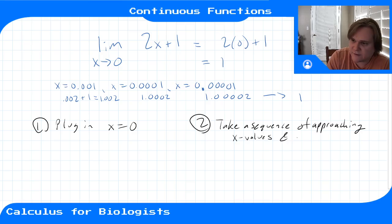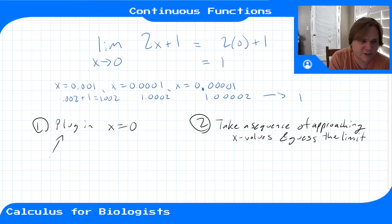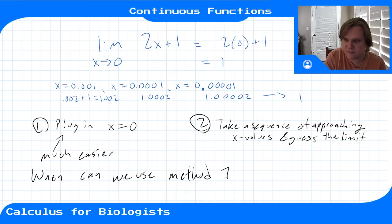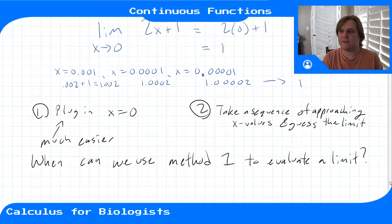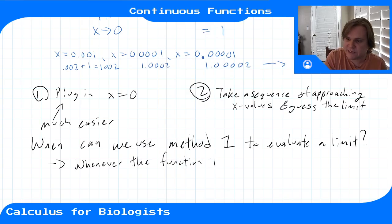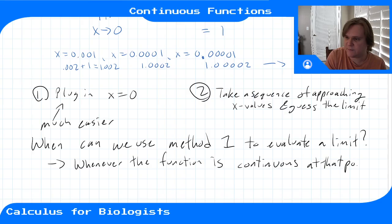Plugging in is obviously much easier, but we can't always do it. So when can we use method one to evaluate a limit? We can use that method whenever the function is continuous at the point where we're trying to take the limit.